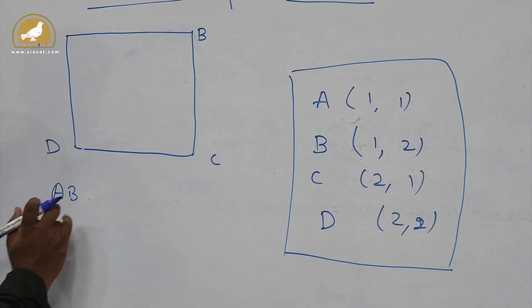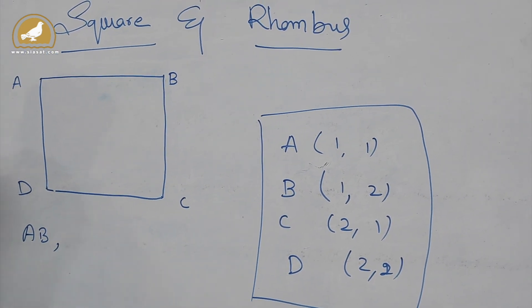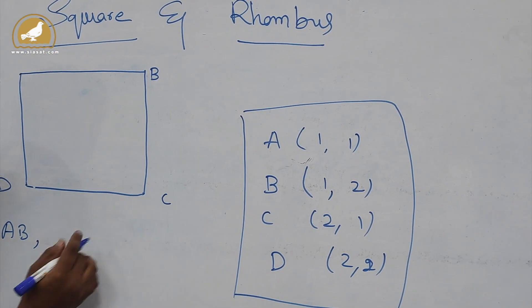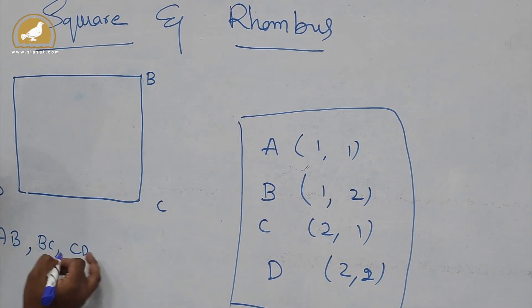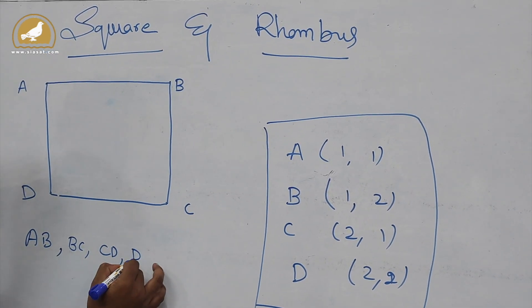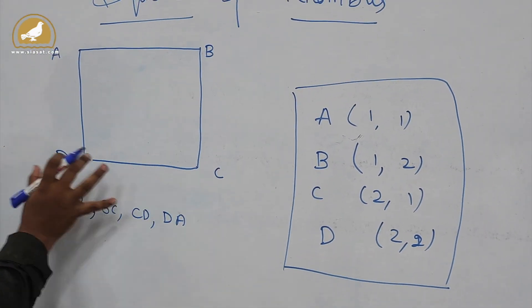In this case, I'll calculate the distance between AB, then BC, then CD, then DA. I'll calculate the distance between all the points using that formula.